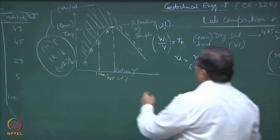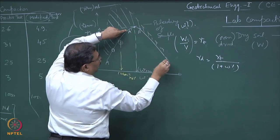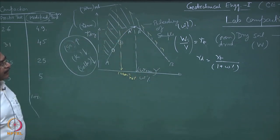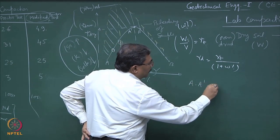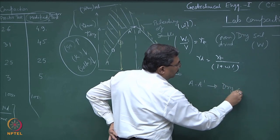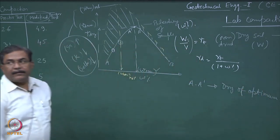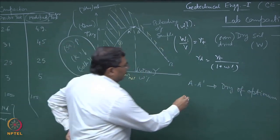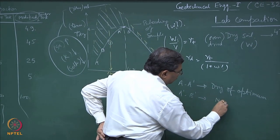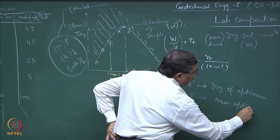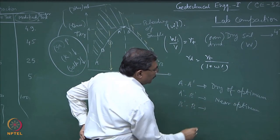Typically, any compaction curve has three parts. From A to A-prime this is known as dry of optimum; A-prime to B-prime will be near optimum; and B-prime to B is wet of optimum.